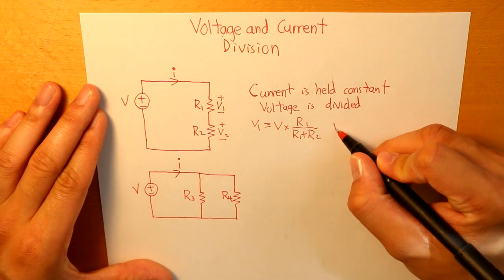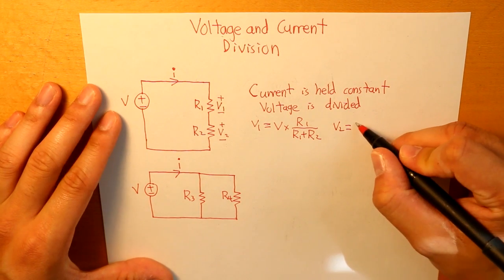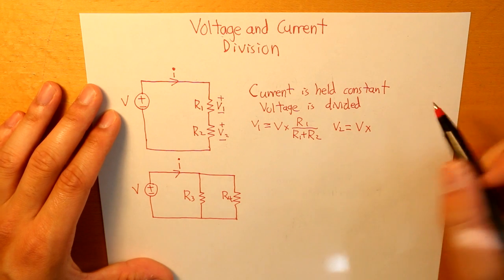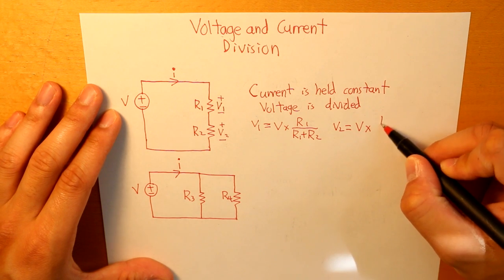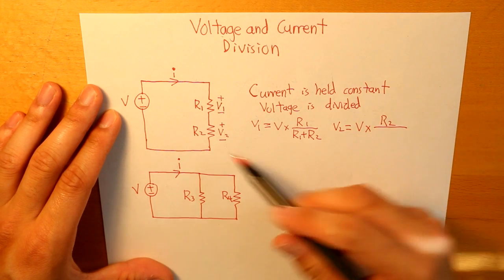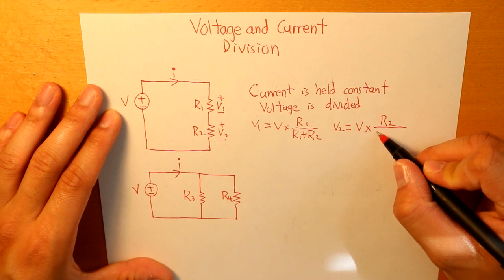Same thing goes for V2. We take the total voltage, multiply by R2, and then divide it by the sum of all the resistors together: V2 = V_total × R2 / (R1 + R2).